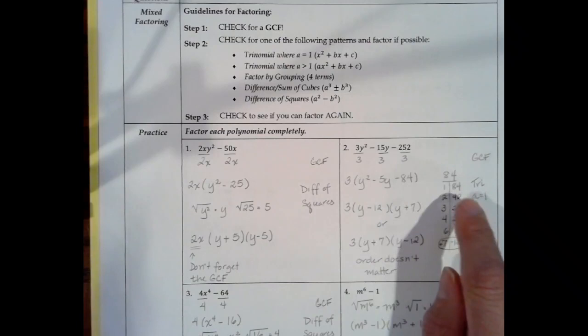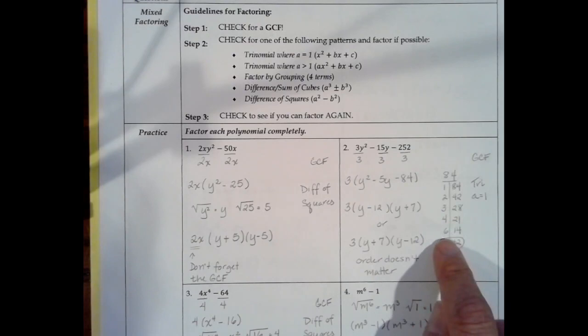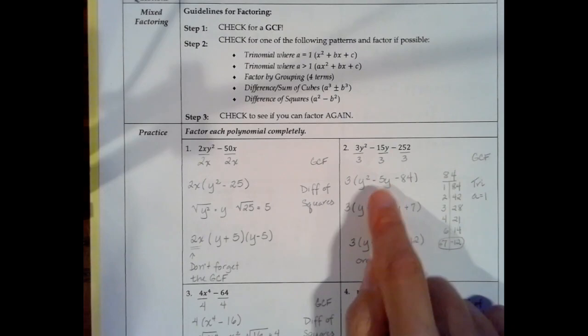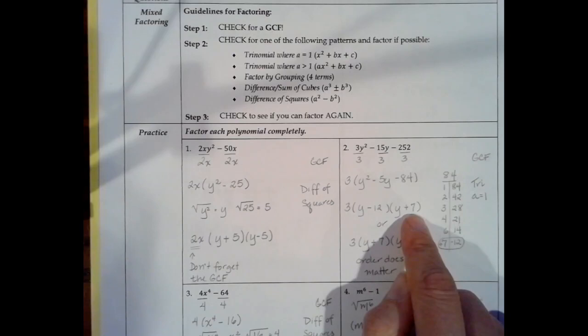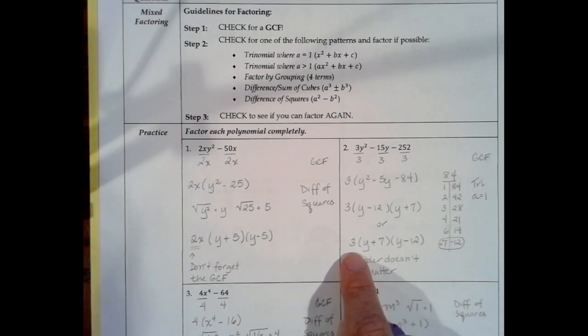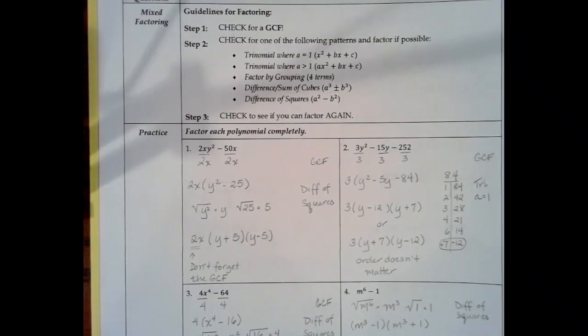After factoring out 3, we have y² minus 5y minus 84 in parentheses — a trinomial where the first coefficient is 1. Let's write all factor pairs of 84 until we find two with a difference of 5: 1 and 84, 2 and 42, 3 and 28, 4 and 21, 6 and 14, and finally 7 and 12. Making 7 positive and 12 negative gives 7 minus 12 equals negative 5. So we factor into y minus 12 times y plus 7. The final answer is 3 times y minus 12 times y plus 7. Do not forget your greatest common factor.